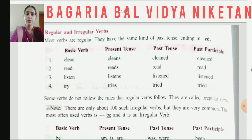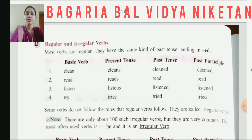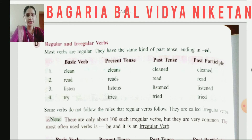Then we have regular and irregular verbs, which we have discussed. Most verbs are regular, which end with '-ed'. Some examples are given here. The difference between a basic verb and a present verb is that when we study tenses, in some cases the basic word stays the same, and in some we need to use 's' or 'es'.